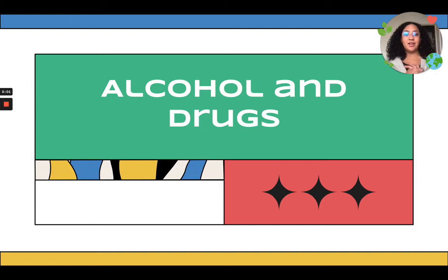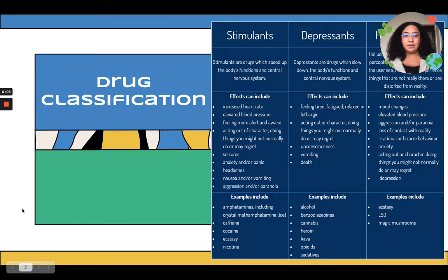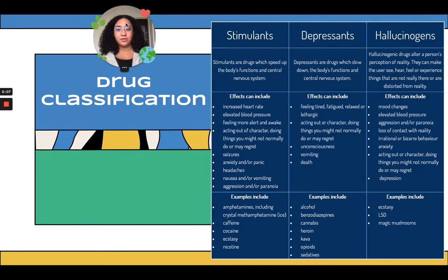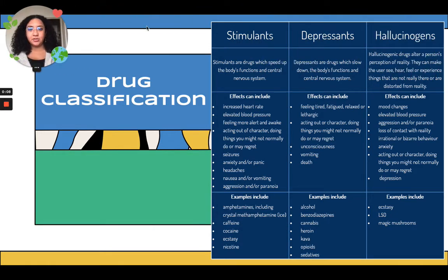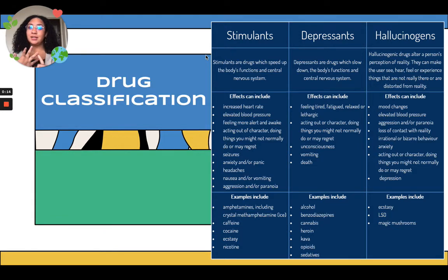We're going to be talking about alcohol and drugs. First, let's look at the drug classification. There are three major types of drugs: stimulants, depressants, and hallucinogens.